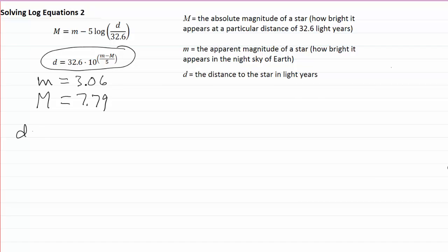Again, we'll use this equation here and when we do that, we will get d equals 32.6 times 10 to the 3.06 minus 7.79 all over 5. We could do that on a calculator in one single stretch of keystrokes, but I'm going to evaluate that exponent first off to the side here. 3.06 minus 7.79 over 5.